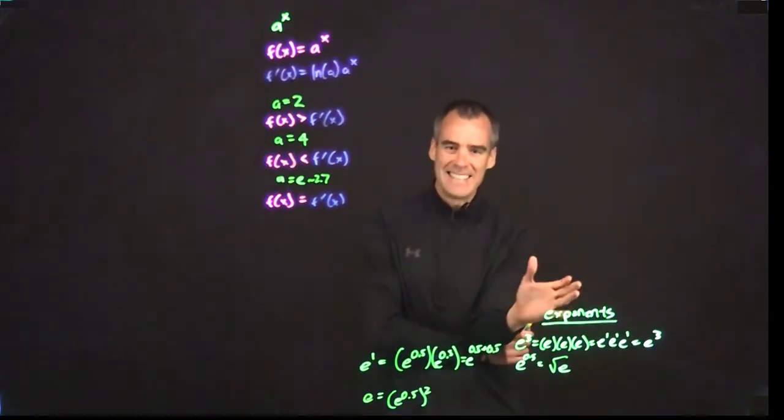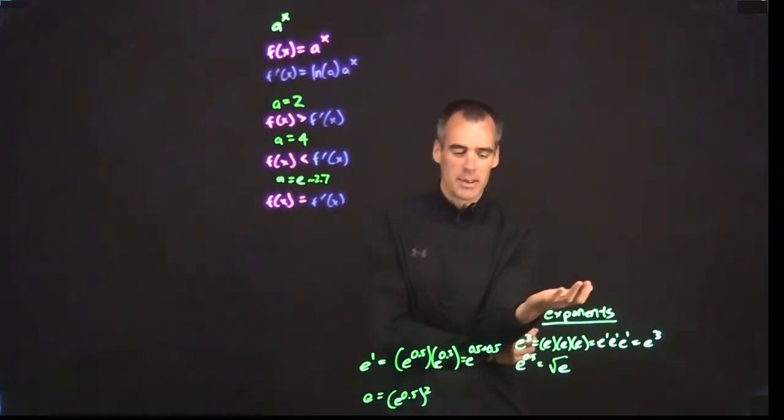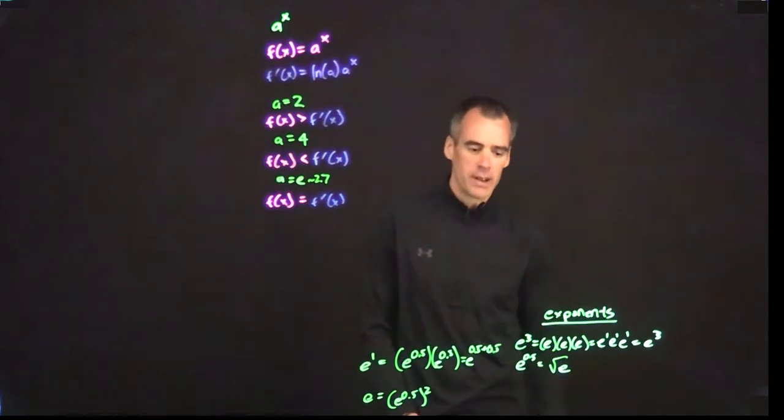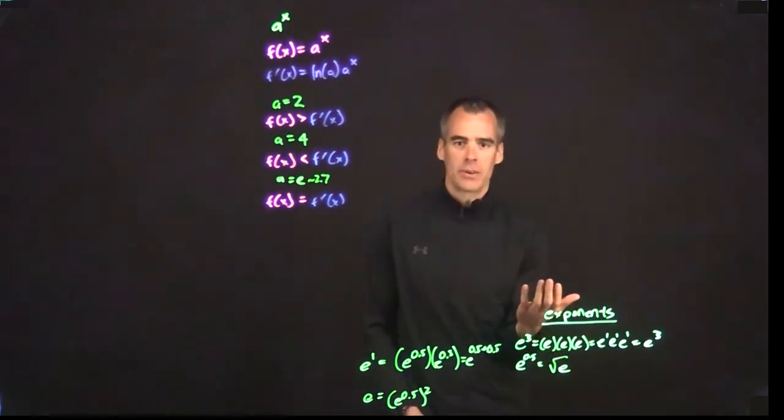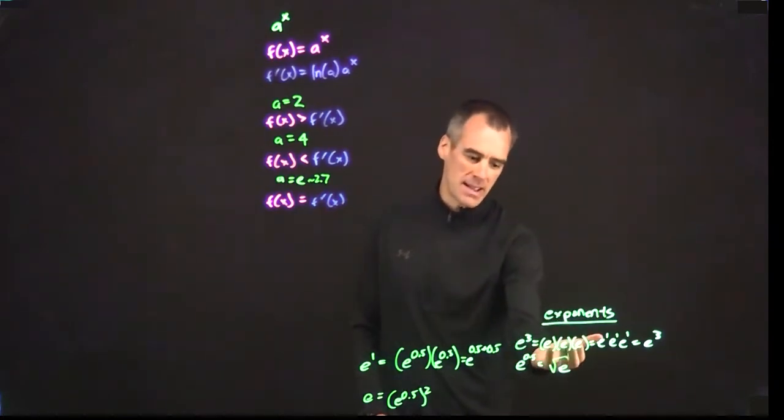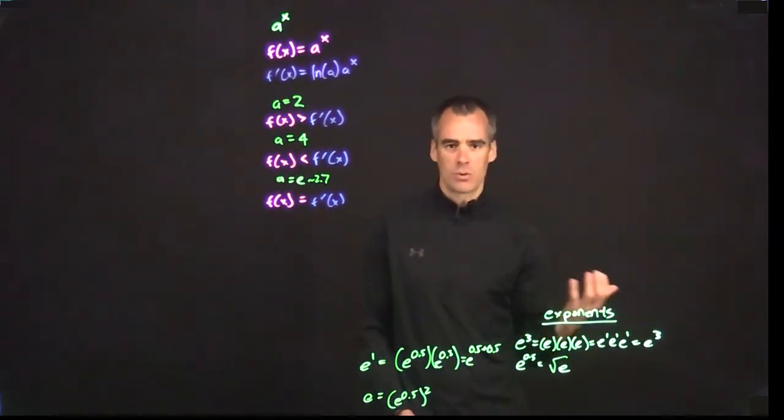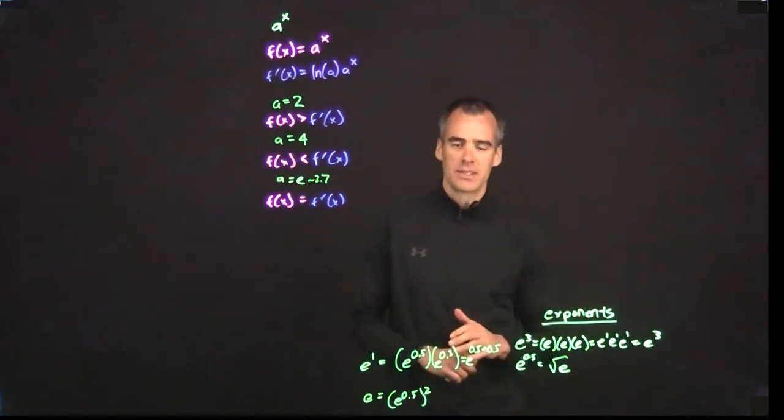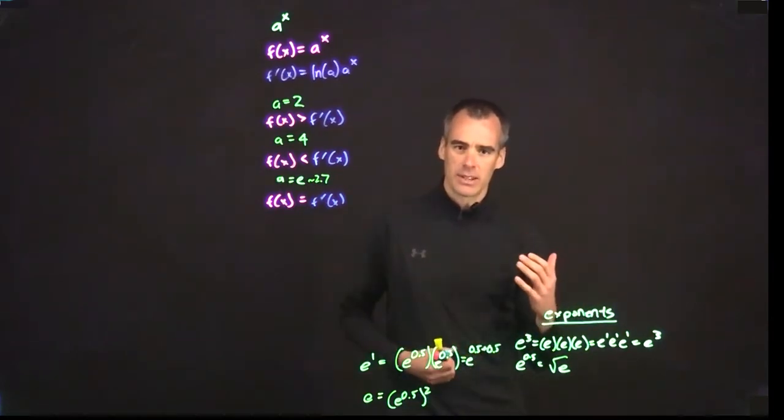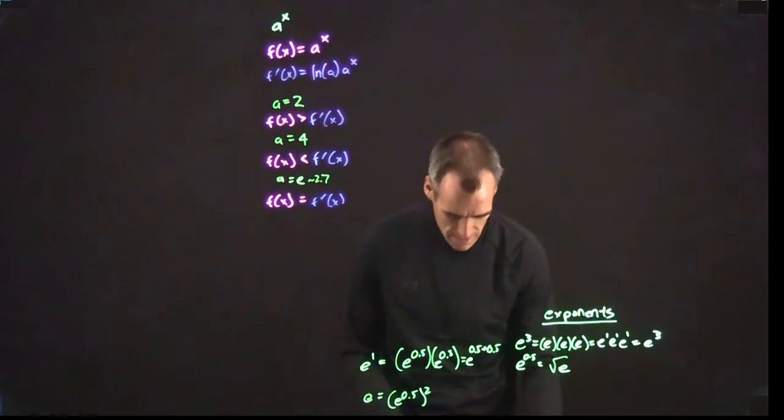What would e to the 3i be? i is an imaginary number, the square root of negative 1, right? So how do I multiply something by itself the square root of negative 1 times? I mean, it just kind of doesn't - it's hard to really envision what that is or what that actually means.